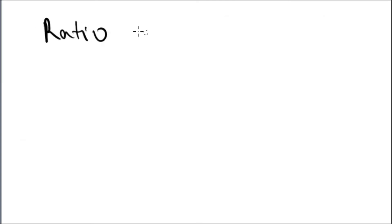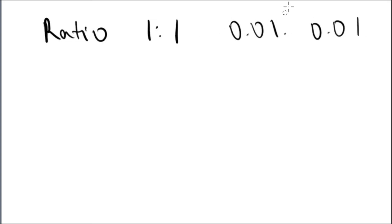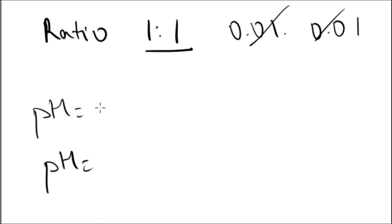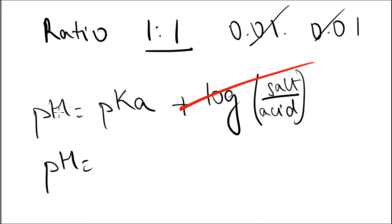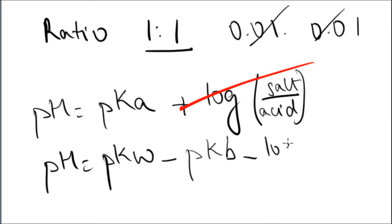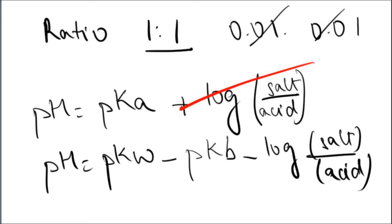If the ratio of the acid or base and its conjugate or salt is the same — for example, 0.01 mol/L of acid and 0.01 mol/L of salt — then the Henderson-Hasselbalch equation simplifies. For acid: pH equals pKa plus log of conjugate over acid, but since the ratio is 1, the log term cancels and pH equals pKa. For the base, the log term cancels and pH equals pKw minus pKb.